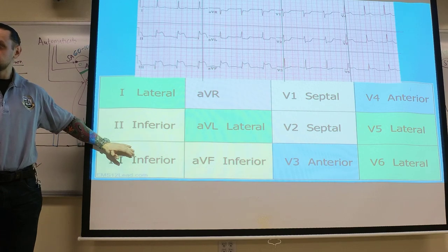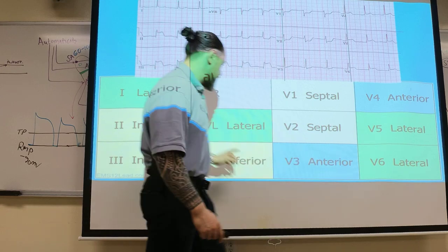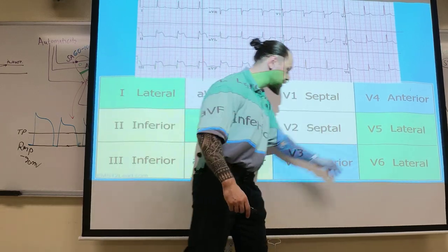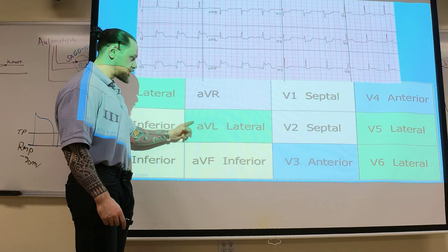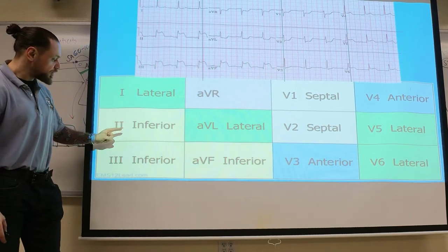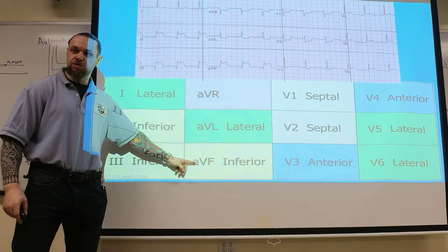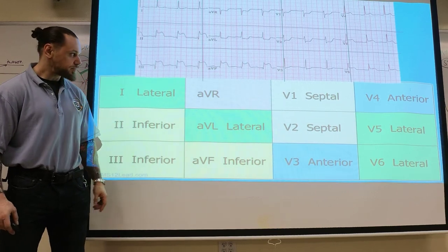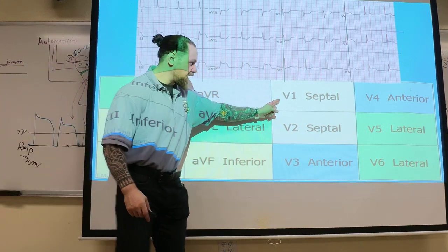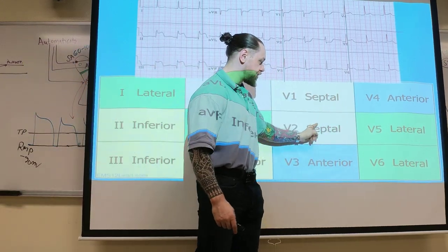To review the lead correlations: circumflex corresponds to V5, V6, 1, and AVL. V5 and V6 is the low lateral, and 1 and AVL is the high lateral. The right coronary artery corresponds to leads 2, 3, and AVF — that's where we see inferior wall elevations. The LAD feeds V1, V2, V3, and V4.